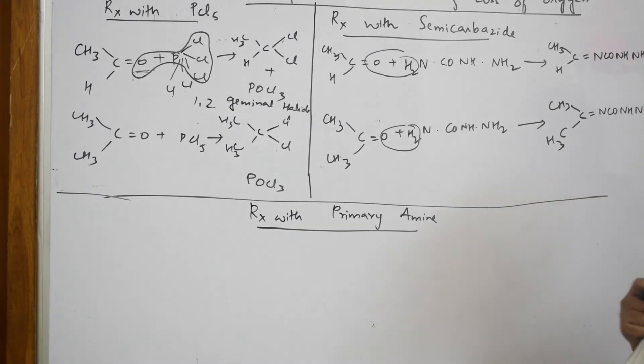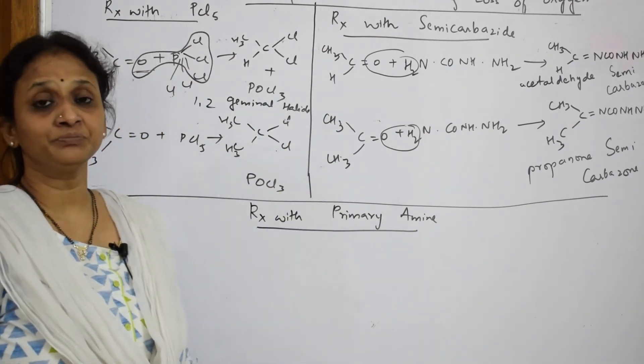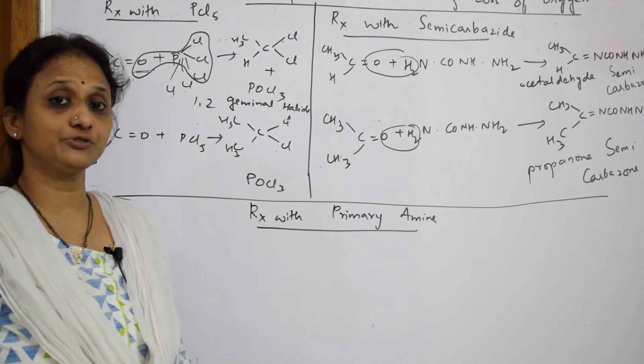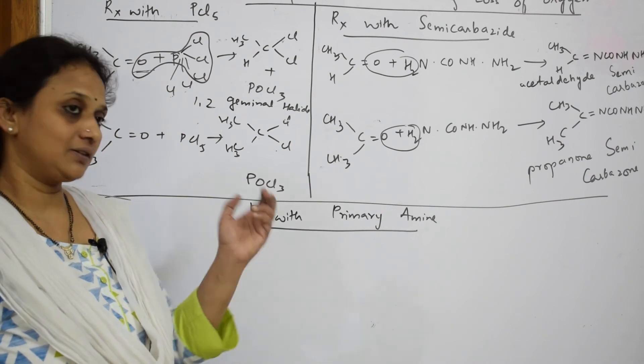Now, this is called semi-carbazone. This is acetaldehyde, isn't it? Acetaldehyde semi-carbazone. This also is propanone semi-carbazone. This is your semi-carbazone. So remember, we have done 2,4-DNP test from hydrazine to hydrazones. What is the test used for? 2,4-DNP is used for identification of aldehydes and ketones in your practical experiments.